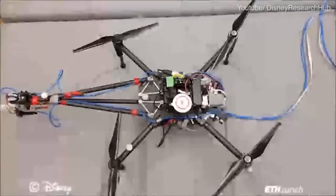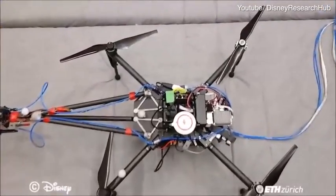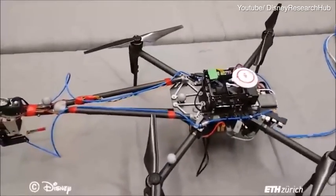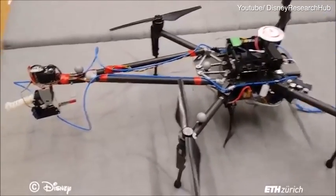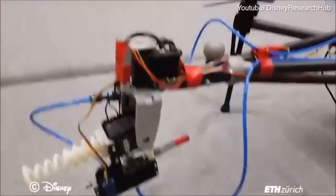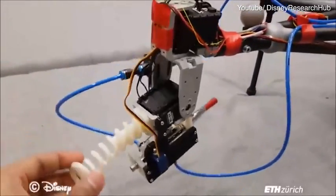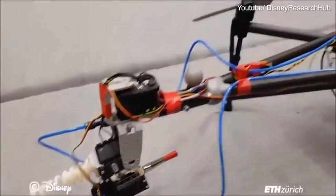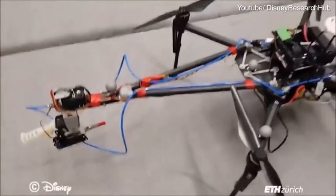This is the Paint Copter. It is a DJI Matrice 100 platform with custom modifications. The spray gun is mounted on a pan tilt unit with the pan tilt unit on the end of an arm so that the spray is not affected by rotor wash.